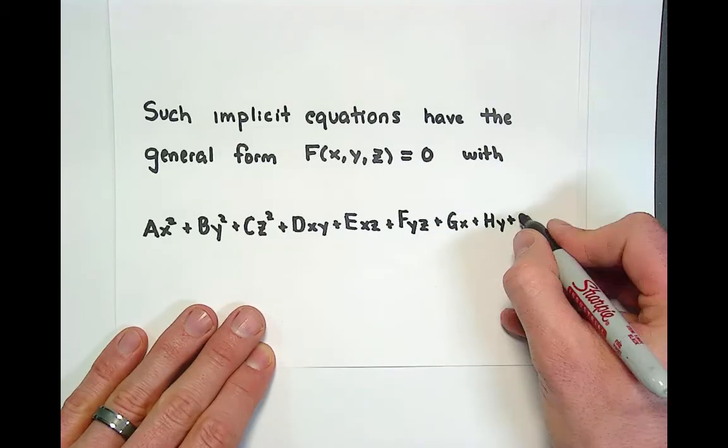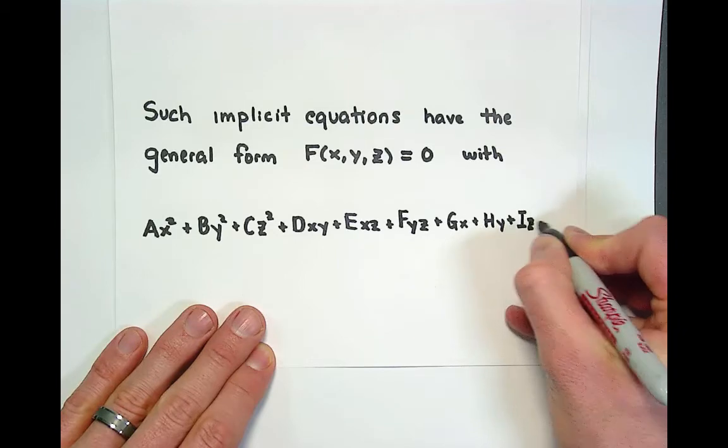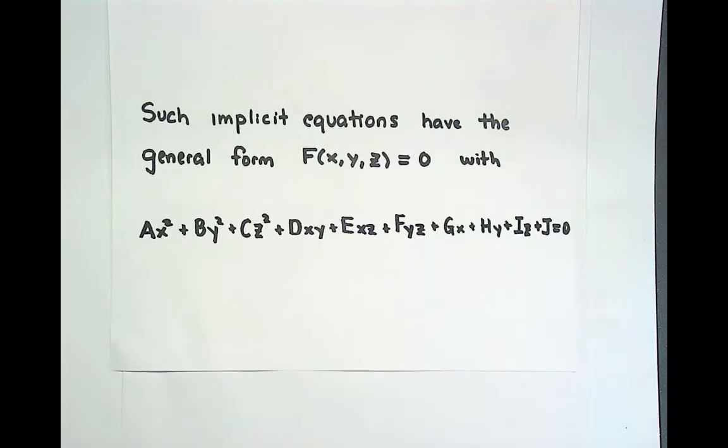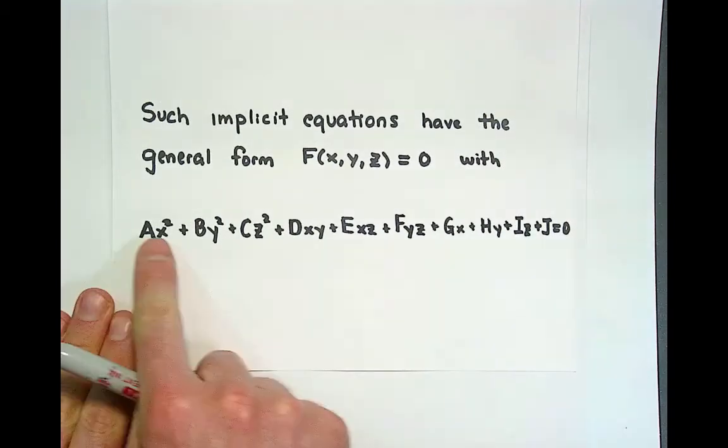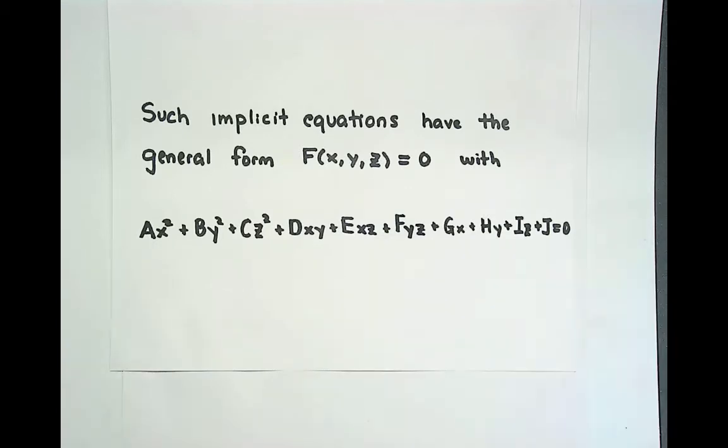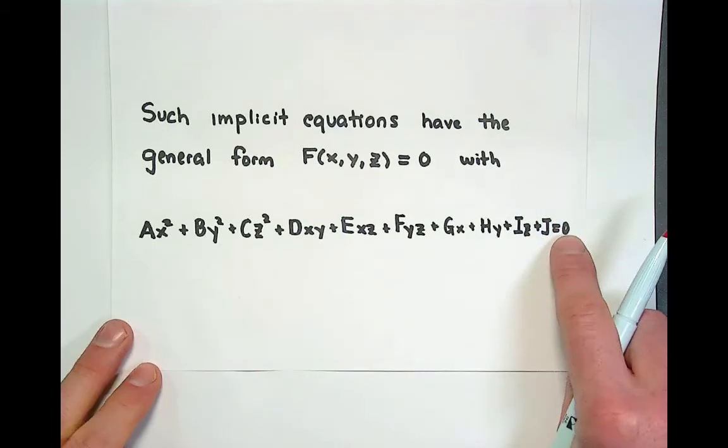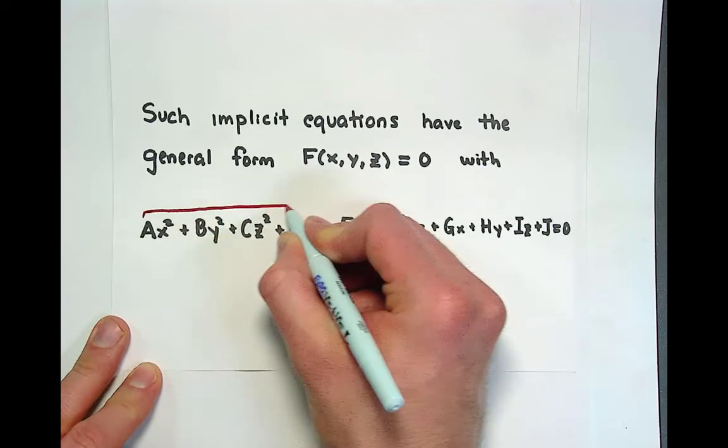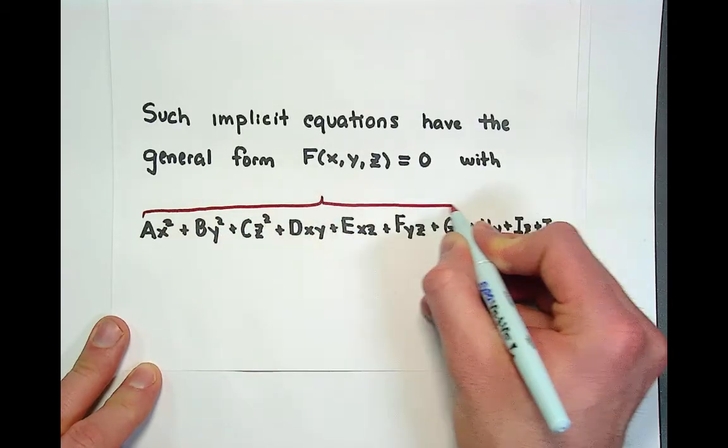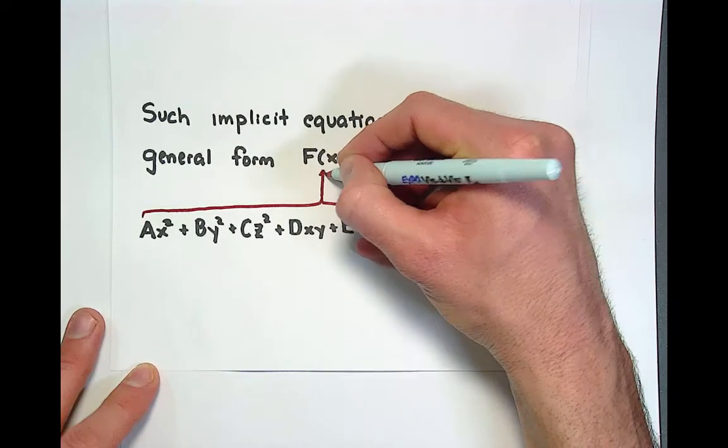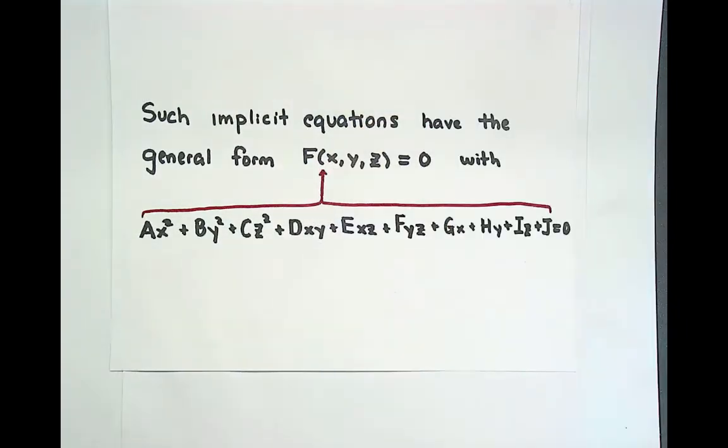And we just keep on going here we would have g times x plus h times y. Oh my god I'm running out of room. Plus j equals zero. Okay I barely made it. That's a rookie move. I gave myself way too much space over here and not enough over here. But anyways this is the general equation for a quadratic surface and notice we have the zero on the right hand side.